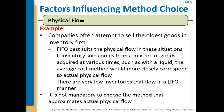If a company wanted to choose a method that most closely approximates specific identification, then the actual physical flow of inventory in and out of the company would motivate the choice of method. For example, companies often attempt to sell the oldest goods in inventory first for some of their products. This certainly is the case with perishable goods like grocery items. The FIFO method best mirrors the physical flow in these situations. The average cost method might be used for liquids such as chemicals, where items are sold from a mixture of inventory acquired at different times and different prices.